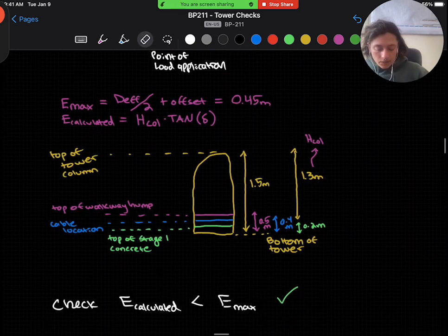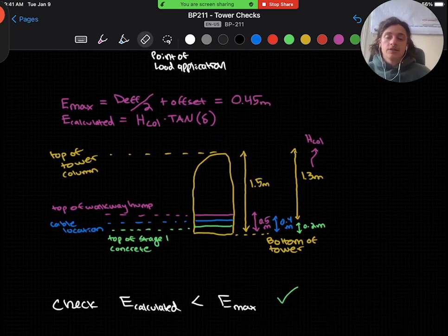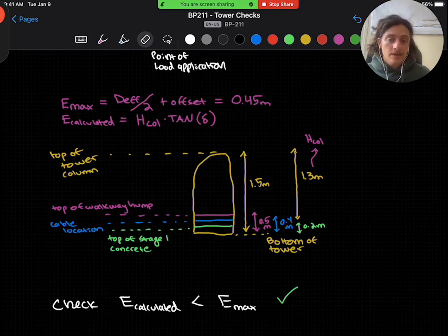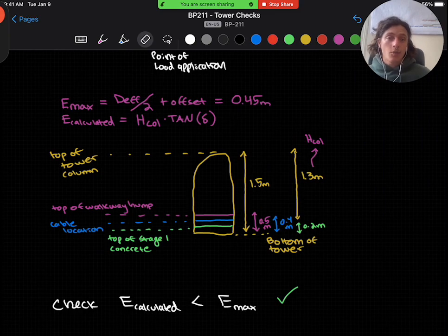And finally, we can check that our calculated eccentricity is less than our maximum eccentricity. And like I said before in the previous lecture, this should really coincide well with our tower overturning checks.